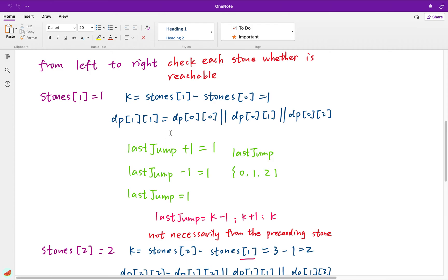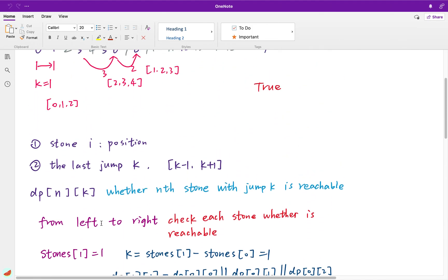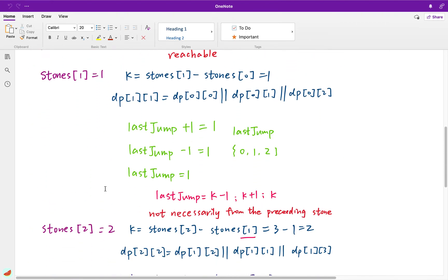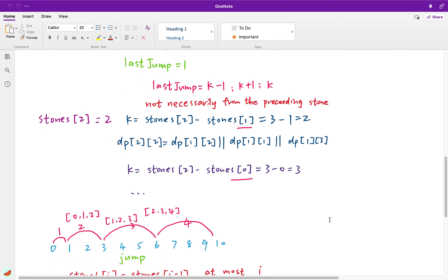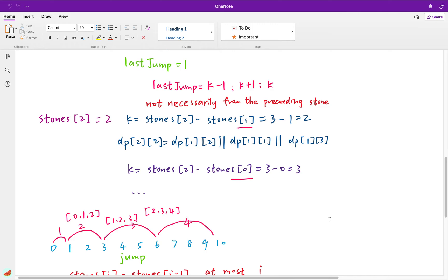Okay, if you understand it, then let's say stone 2 is equal to 2. Then we'll see k equal to stone 2 minus stone 1. But as we see in the example before, it's not necessary to be the preceding stone. It can be stone 0. So we actually should iterate all its previous stones. And every time we get this k, we just update this dp[2][k] to dp[1][k-1], k+1 and k.